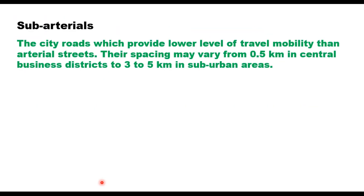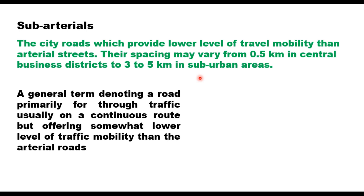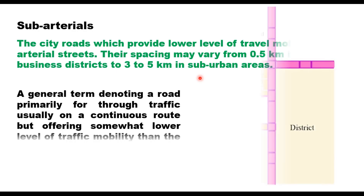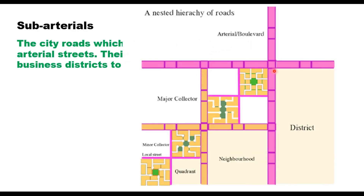Sub-arterials are similar to arterials but offer a lower level of traffic mobility. They may have the same geometry as arterial roads but feed traffic to the main arterial roads. Generally, sub-arterial roads serve to channel traffic into the main arterial roads.